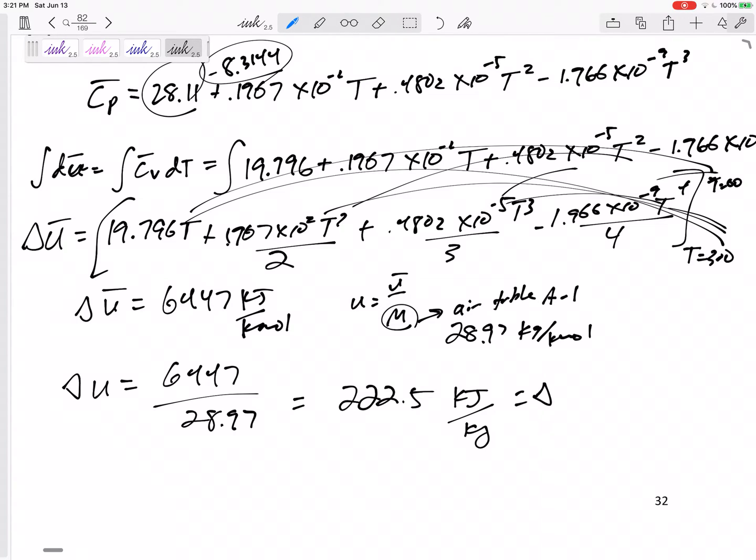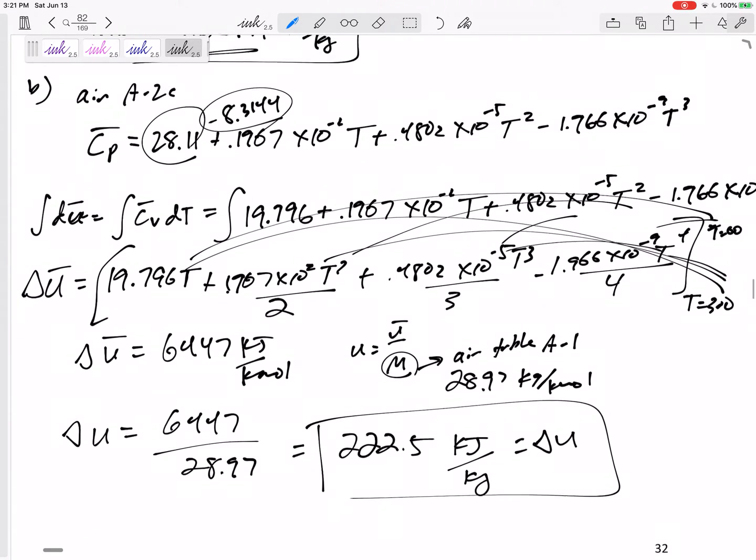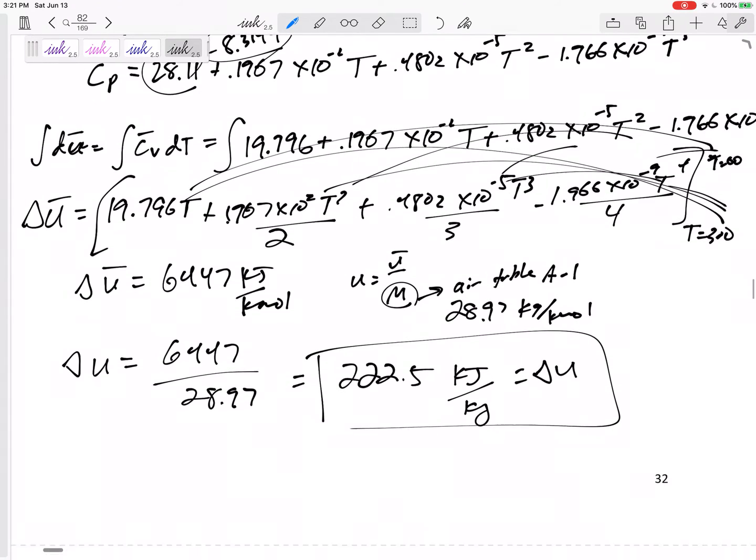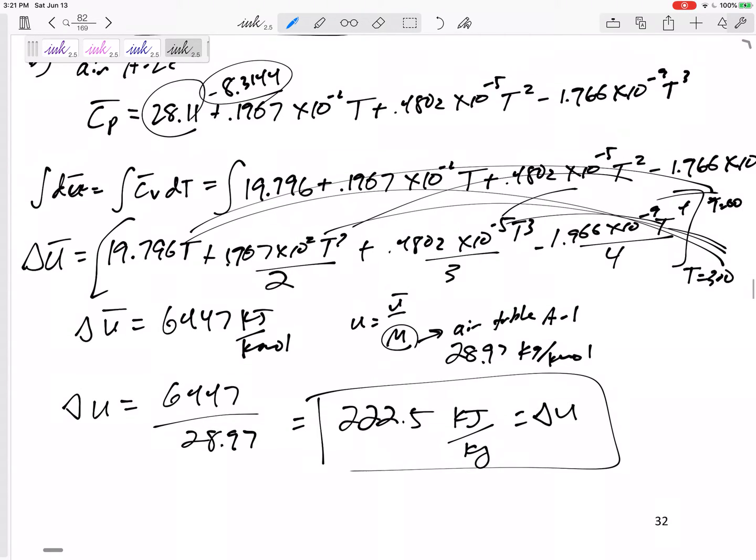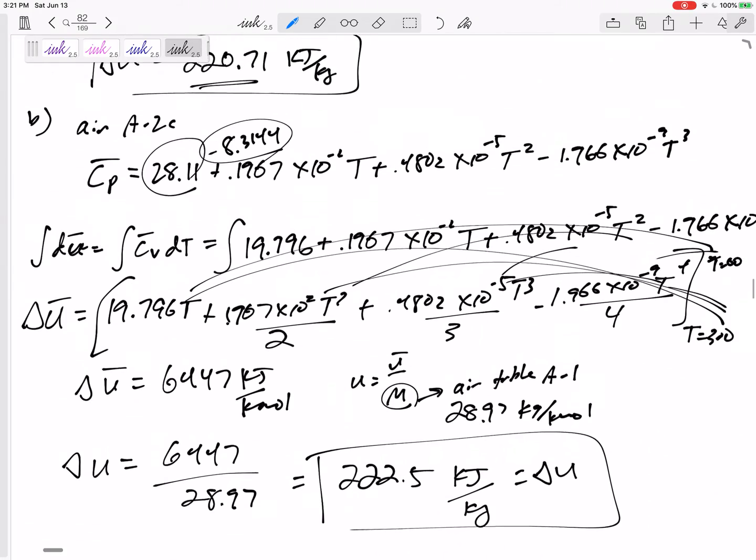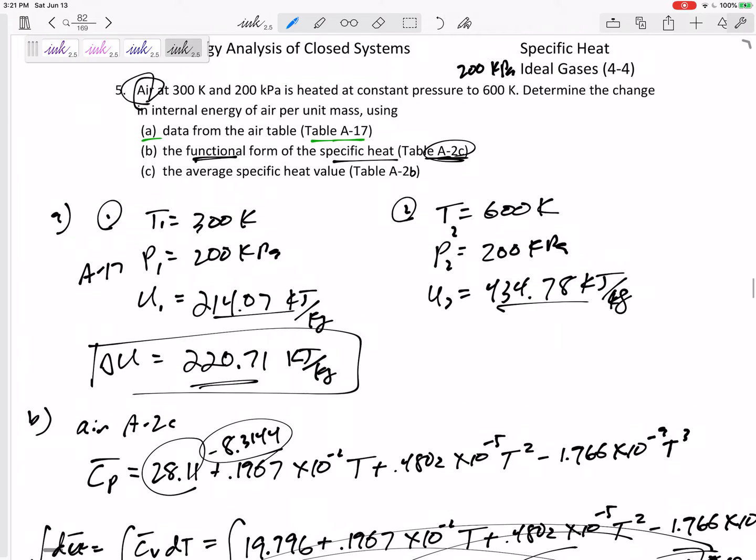So delta U would be 6447 divided by 28.97, 222.5 kilojoules per kilogram equals delta U. All that math, and pretty close to 220. 222.5 kilojoules per kilogram. Was that worth it? Was all that math worth getting it? I don't know. Close to accurate.